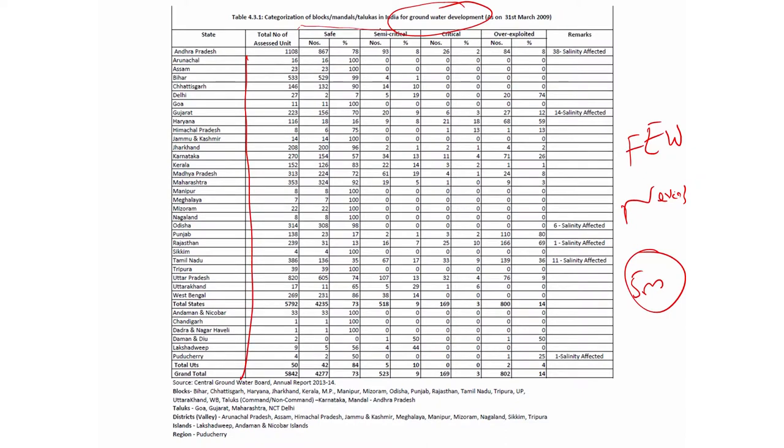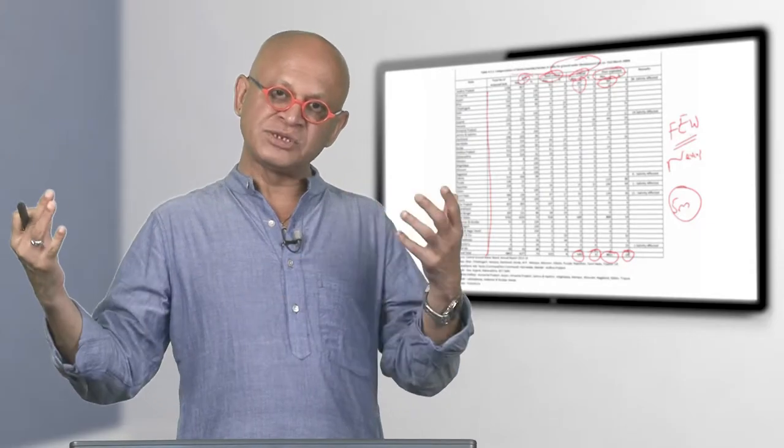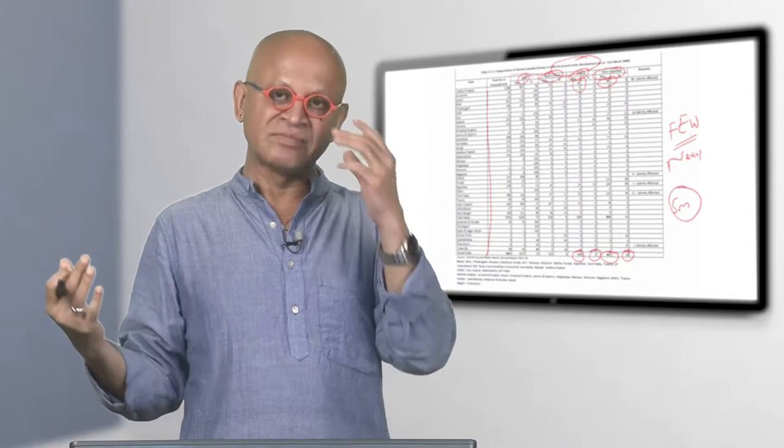Ground water is sinking. You probably have experience in your own neighborhood where a bore well now has to go several hundred feet deep to get water. By state, ground water development is considered safe, semi critical, critical or over exploited. For example, Andhra Pradesh has 84 over exploited and 26 critical conditions for ground water sources.